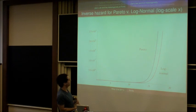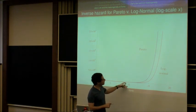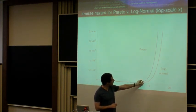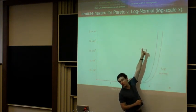This is the inverse hazard rate—one over that hazard rate. You see that the Pareto and log-normal distribution are very similar until you get very high, and then the Pareto distribution gets enormously higher than the log-normal distribution. The tails are much fatter.